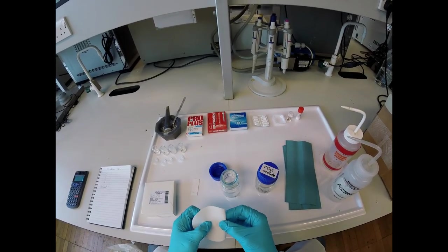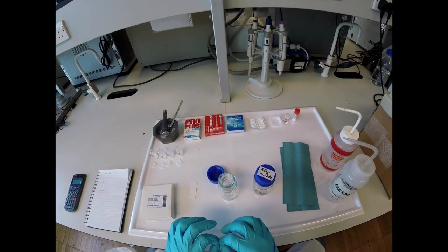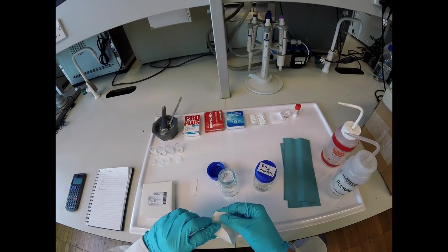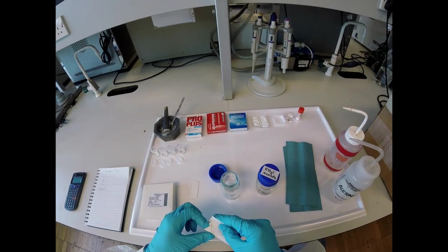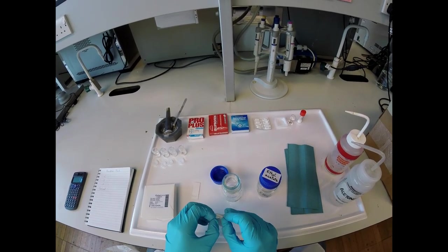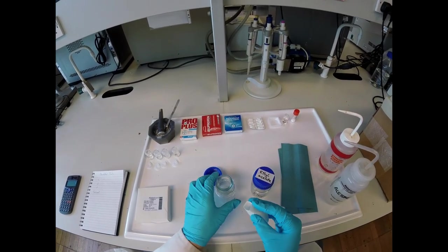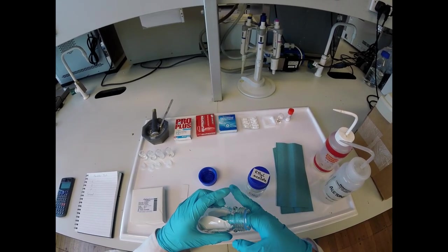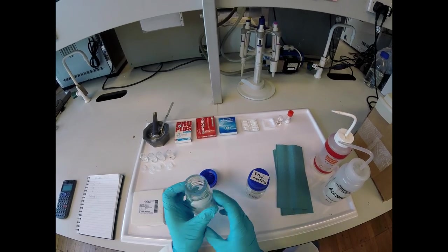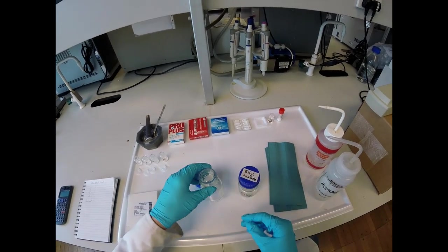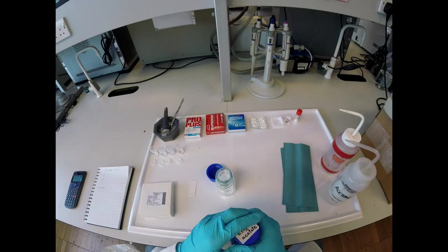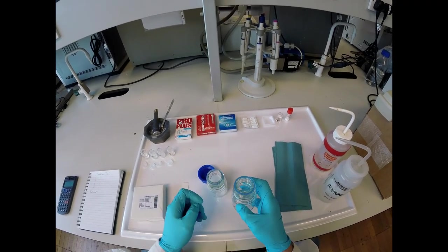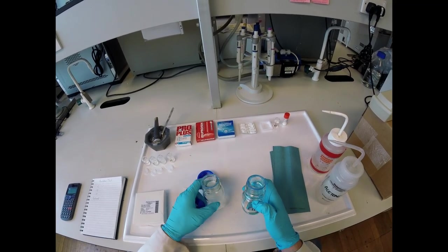Otherwise what's going to happen is as the solvent works its way up the TLC plate, it will evaporate off the TLC plate and the solvent front will not rise as fast as it should. So I'm going to line the inside of this tank with a filter paper just like that. What that will do is it will soak up the ethyl acetate and help the air inside stay saturated with vapors.